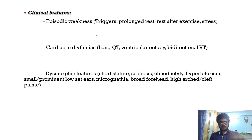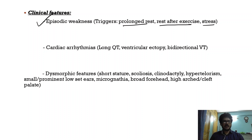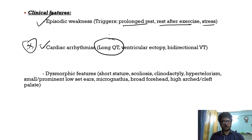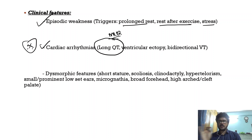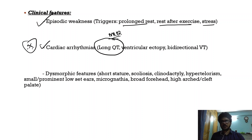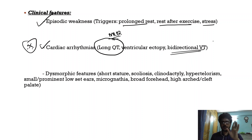Clinical features: patients have episodic weakness triggered by prolonged rest, rest after exercise, and stress. Cardiac arrhythmias are very important — patients have long QT syndrome. All three features need not be present together. All patients diagnosed with long QT syndrome should be screened for Anderson-Tawil syndrome. Do not forget long QT and bidirectional ventricular tachycardia.